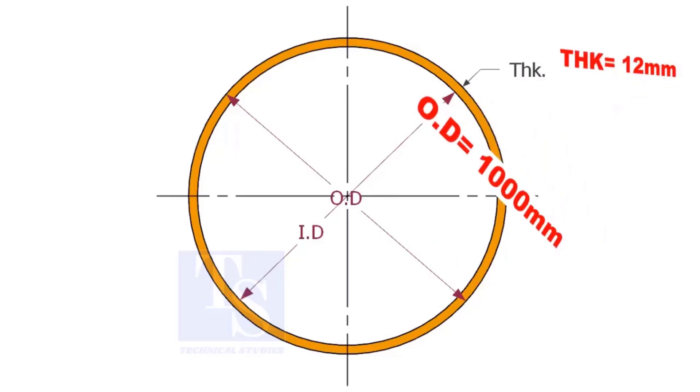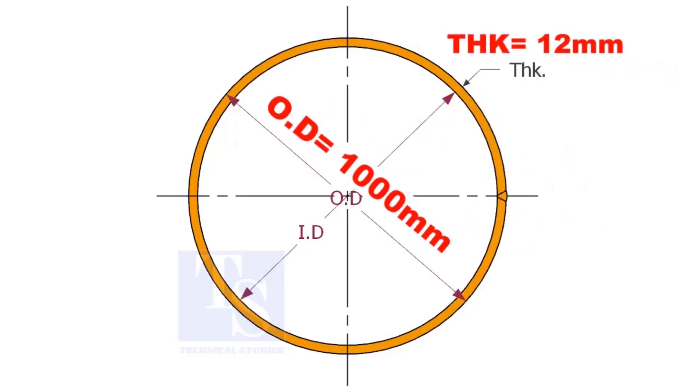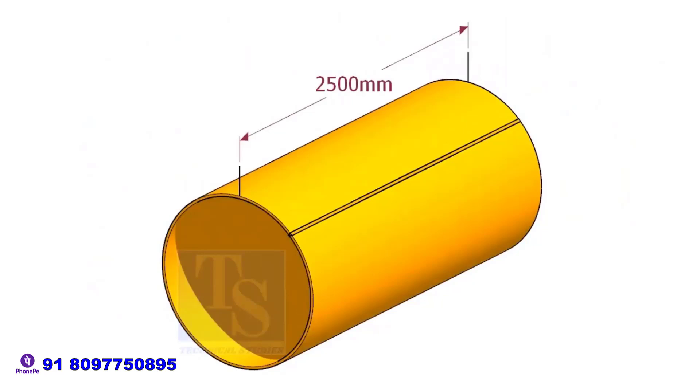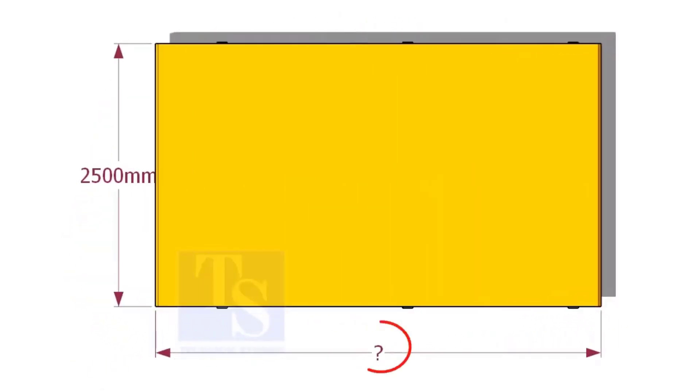Assume that we need a pipe with an inside diameter of 1000 mm and thickness is 12 mm, and the length of the pipe 2500 mm. What will be the length of the plate?